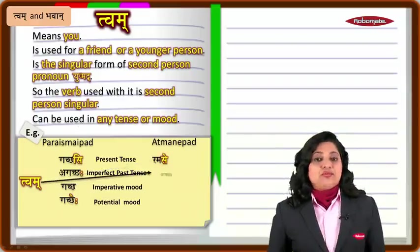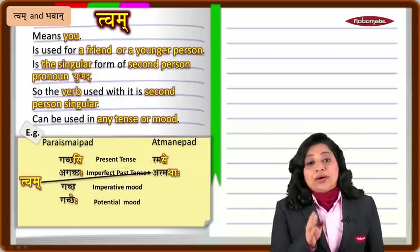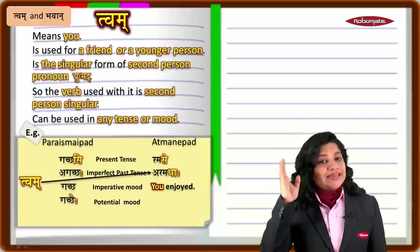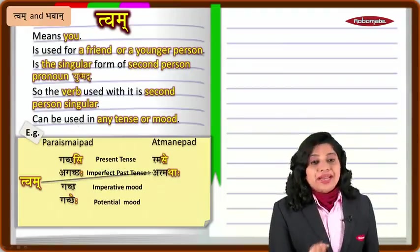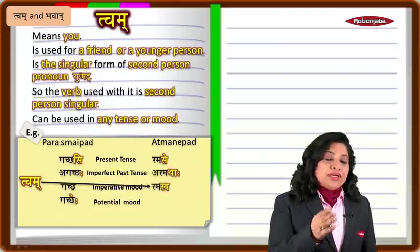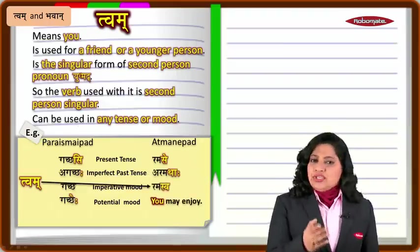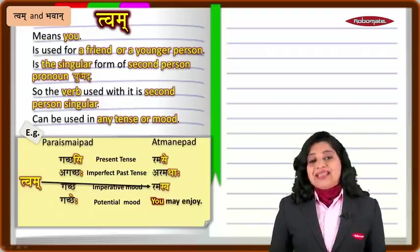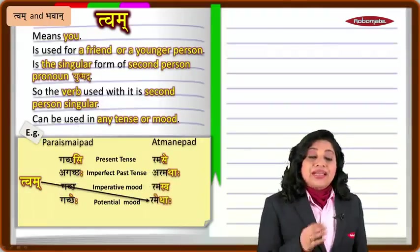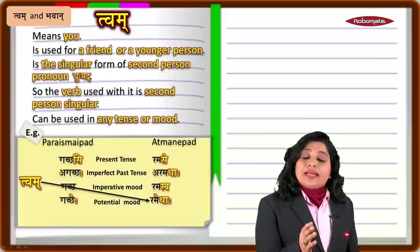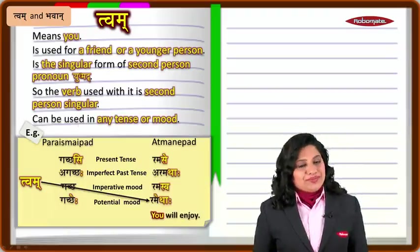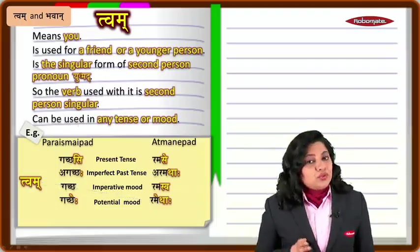In the imperfect past tense: 'twam aramastha,' meaning 'you enjoyed.' In the imperative mood: 'twam ramasva,' meaning 'you may enjoy.' In the potential mood: 'twam ramethah,' meaning 'you would enjoy' or 'you will enjoy.' So we have seen what happens for twam.